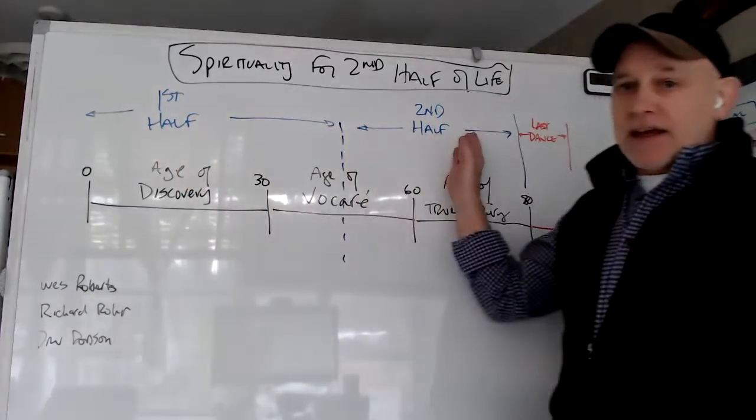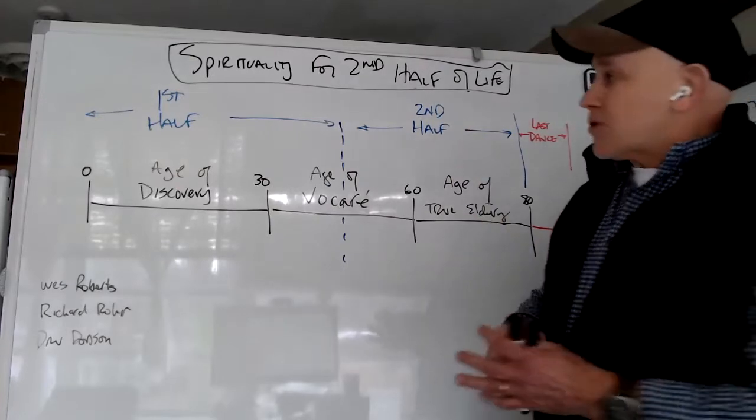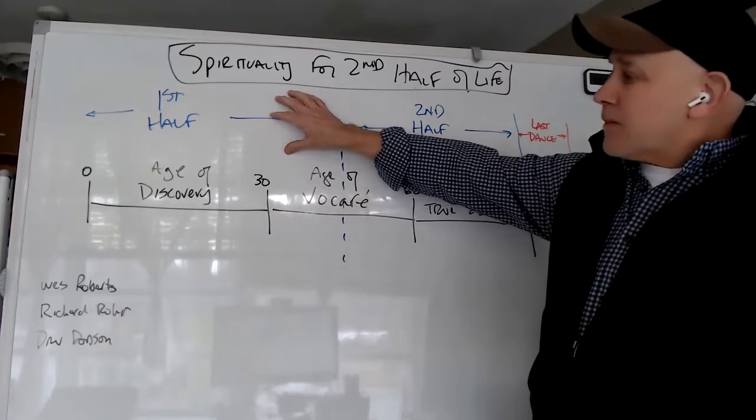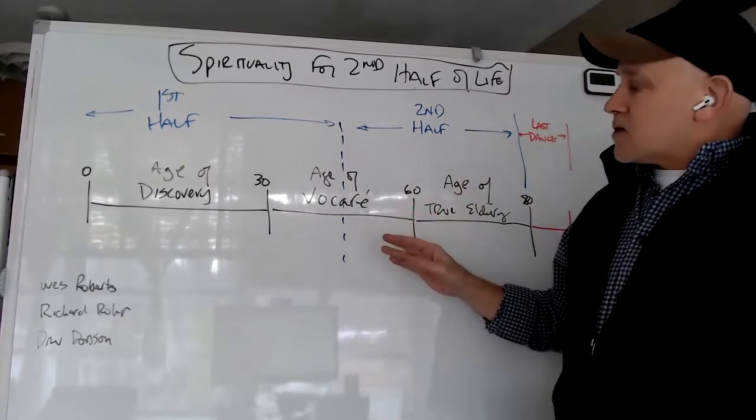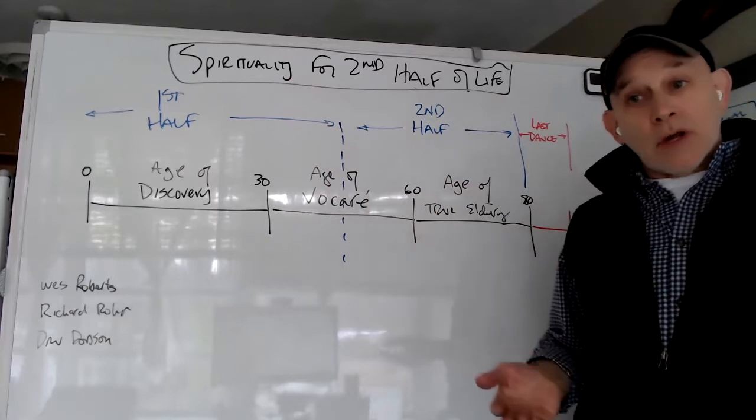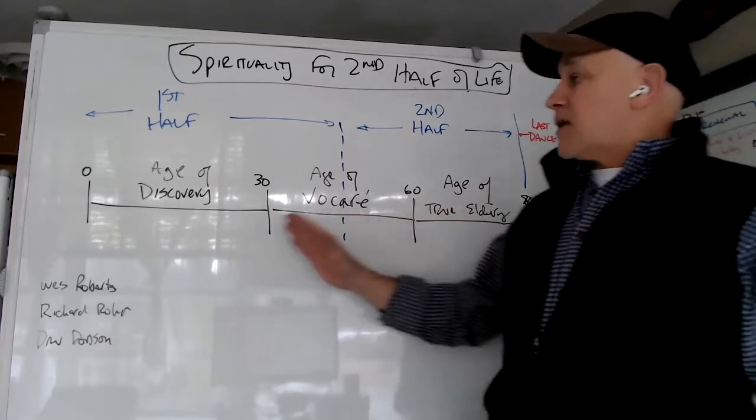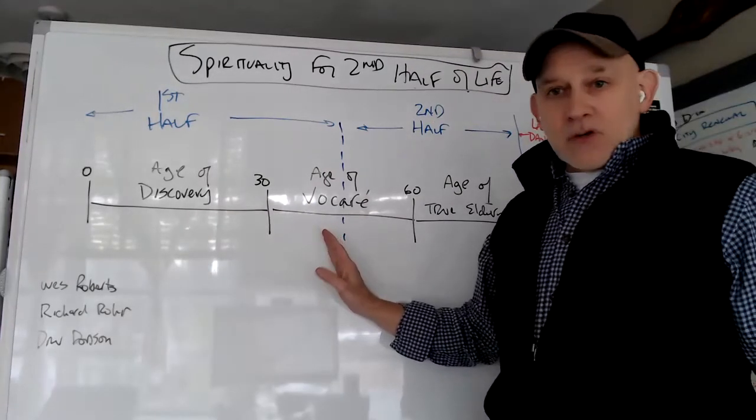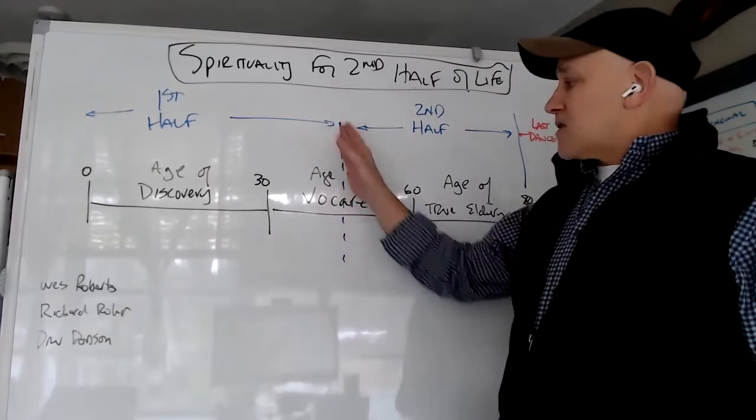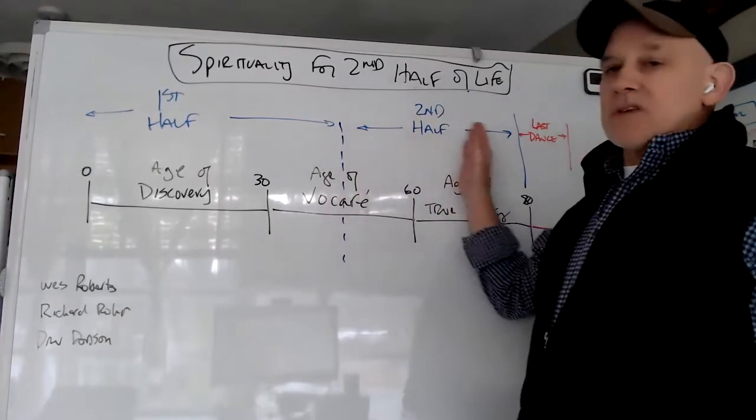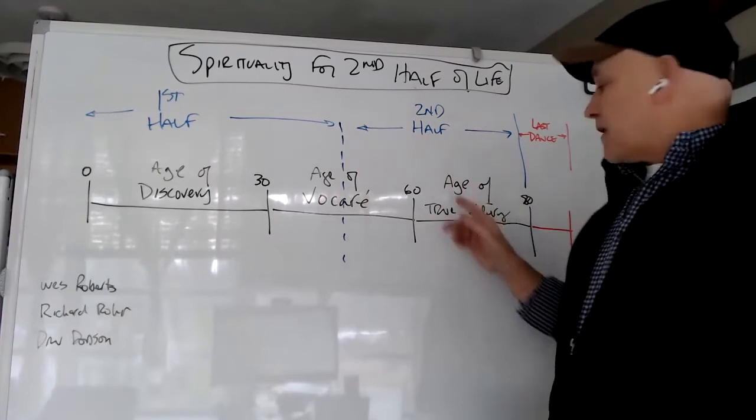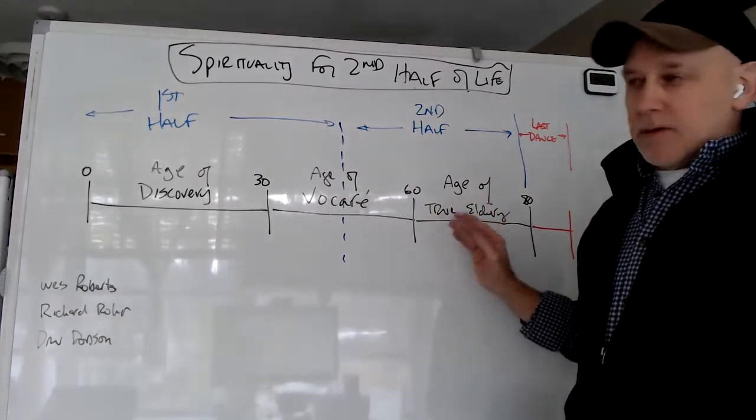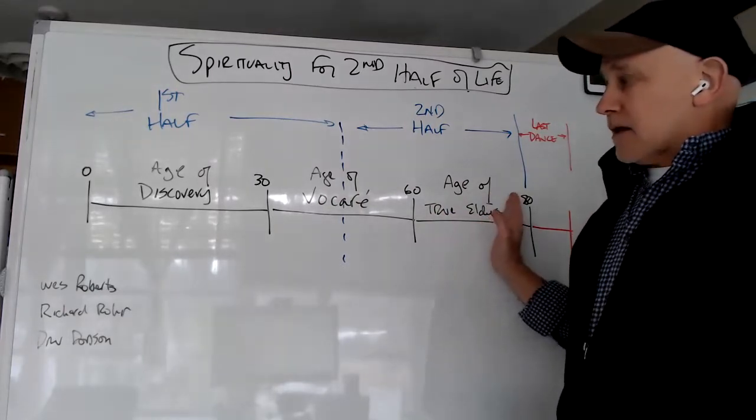And this is from Richard Rohr in his book. And his premise is that throughout history and across cultures, there's an awareness that there is a point in life where we have a first half of life, that something begins to happen and we move into the second half of our life. And this age of true eldering, I get that phraseology from Rohr as well, the idea of becoming a true elder. And I'll explain that, as I said.